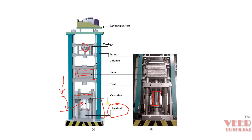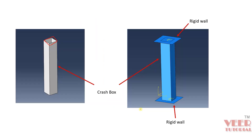Similarly in this problem, we are going to follow this testing approach. We are going to fix the crash box from the bottom and then give it some displacement from the top in the downward direction. We are going to check whether it is crumpling and how much energy it is storing. With this, we will continue in the next lecture where we will start modeling and performing the simulation.